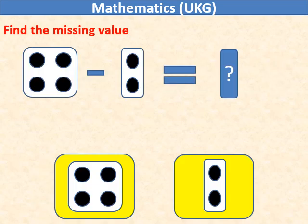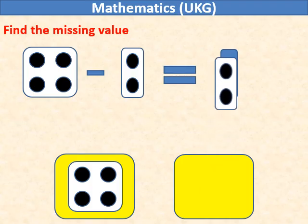Find the missing value. From the four dots, if you subtract or remove two dots, then remaining dots will be 2.